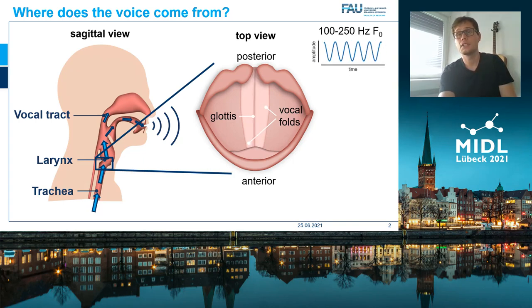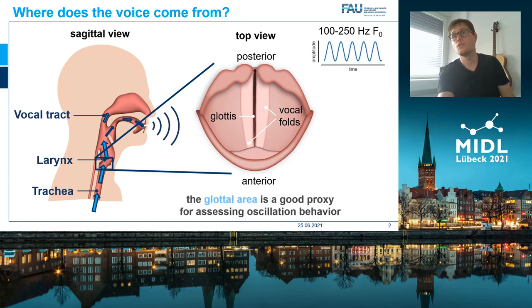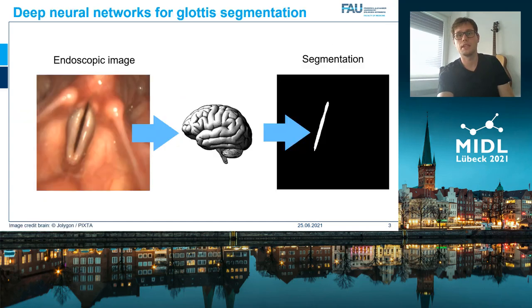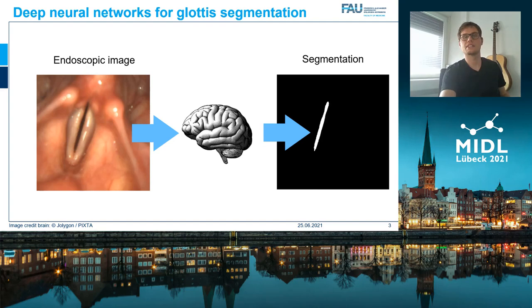Here you can see the glottis, and the glottal area is a very good proxy for the oscillation behavior. Knowing that, segmenting the glottal area is crucial for quantifying voice physiology. This means a high glottis segmentation quality is therefore very important.